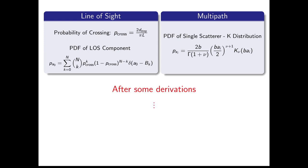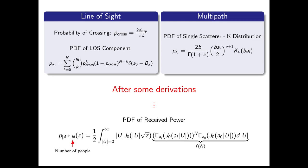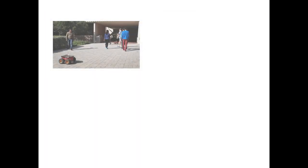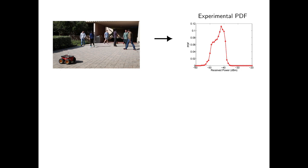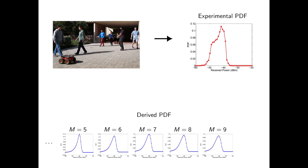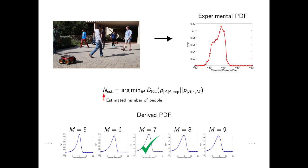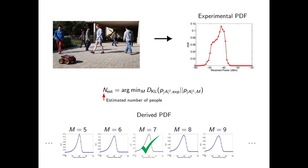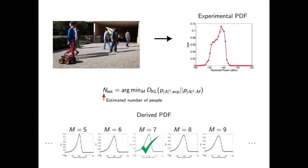We then utilize the well-known k-distribution to model the scattering impact of a single person. After some derivations, we derive an expression for the probability density function of the received power as a function of the number of people present. For instance, consider this example with seven people again. From the measurements of the Wi-Fi card, we can get the experimental probability density function. By comparing this to our derived expression, we then estimate the number of people using KL divergence. We can see that our approach estimates the number of people correctly as seven.